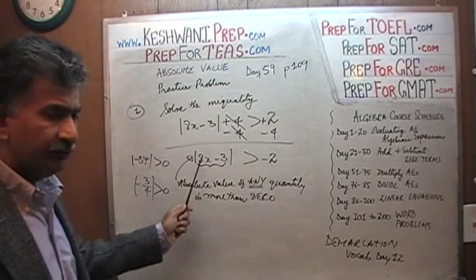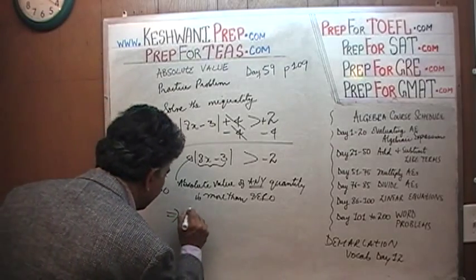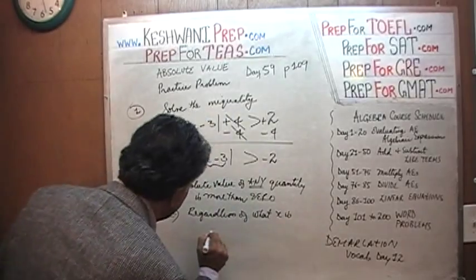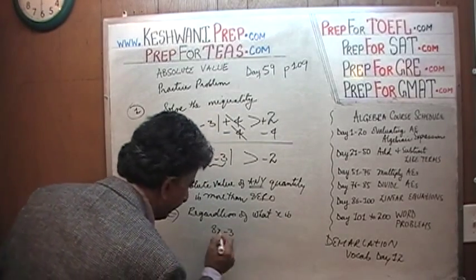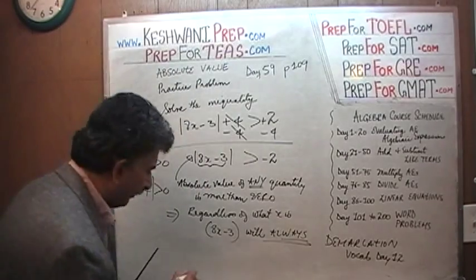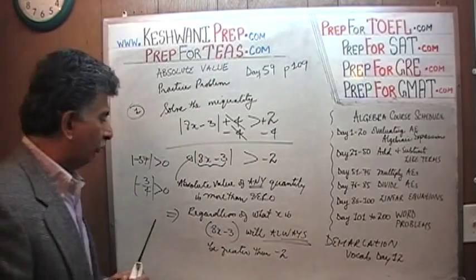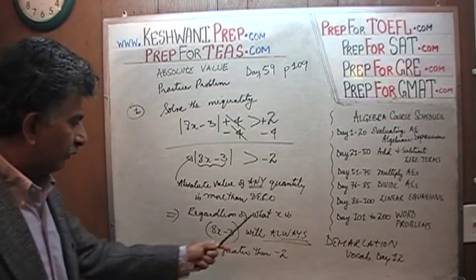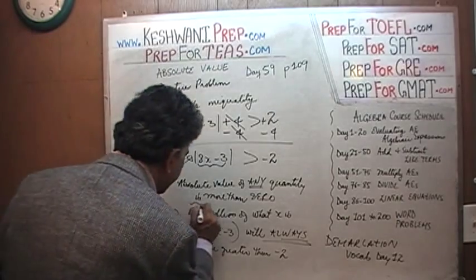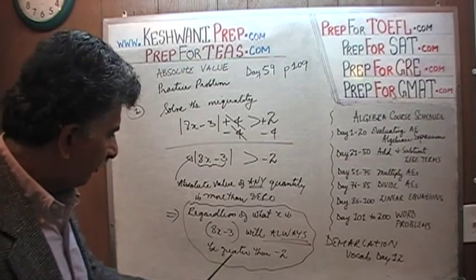So whatever this quantity is, it is some positive quantity. This implies that regardless of what x is, |8x − 3| will always, always be greater than negative 2. Regardless of what x is, this quantity will always be greater than negative 2. This part is our answer.